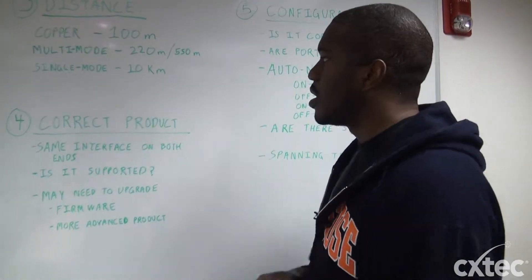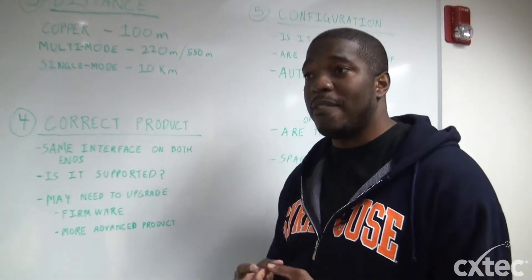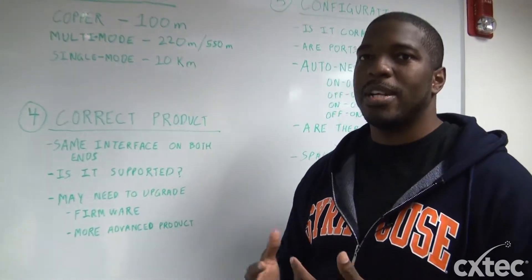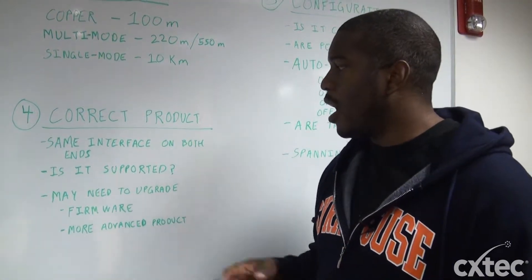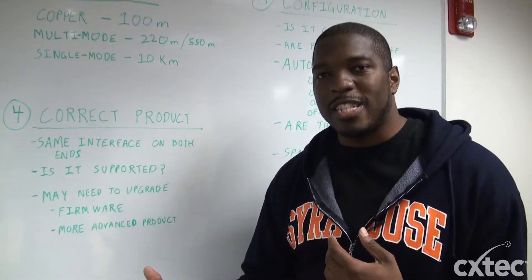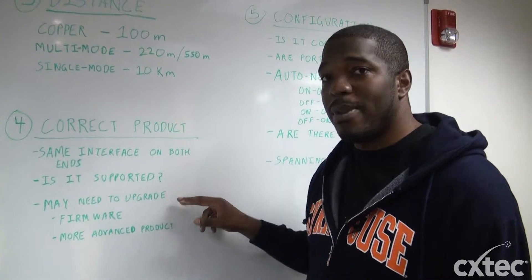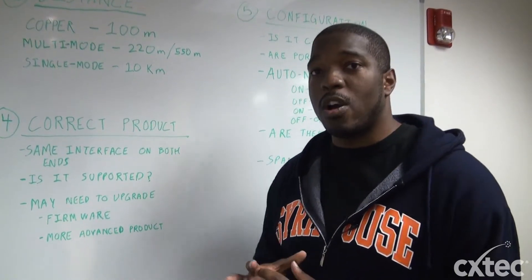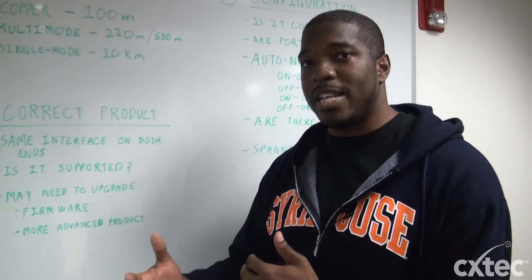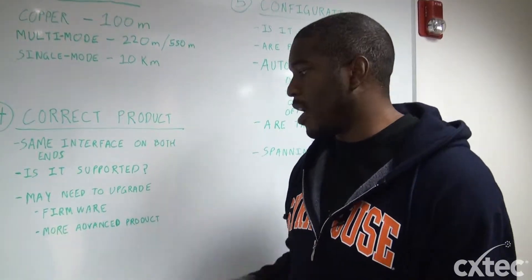Number four: make sure you have the correct product. Is it the same interface on both ends? Do you have a multi-mode SFP on one end and an LX on the other? Also check whether it's supported — for example, an HP SFP in a Cisco switch really doesn't work well. You may also need to upgrade firmware, as sometimes the SFP is supported but you're on the wrong firmware version, or the SFP doesn't work in legacy equipment and you need a more advanced product.